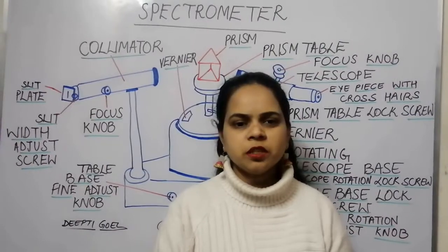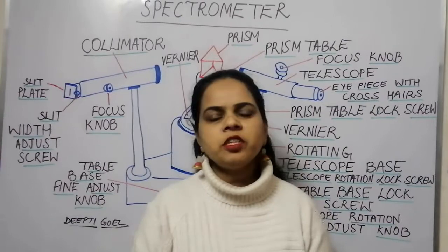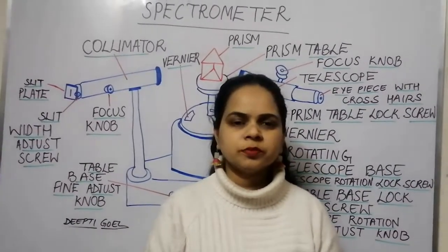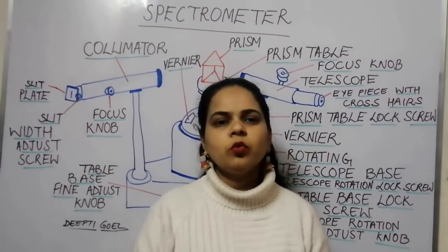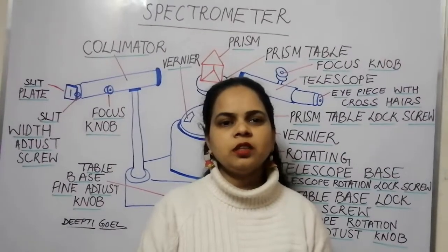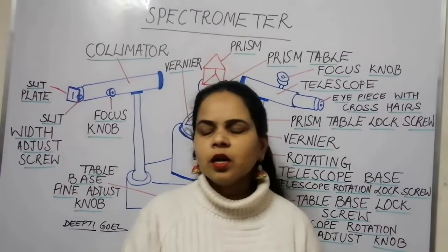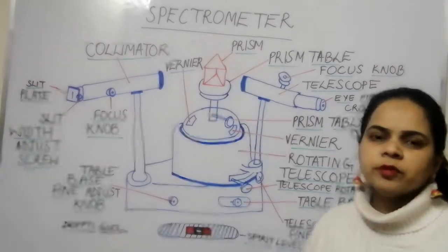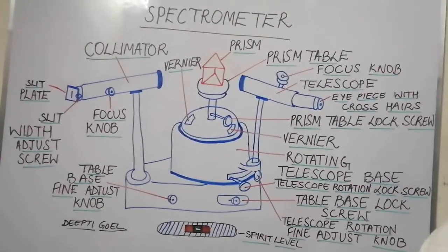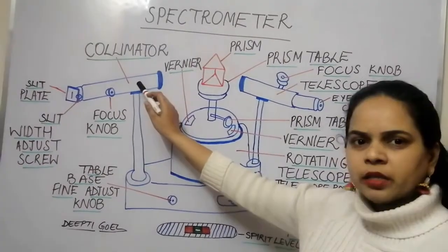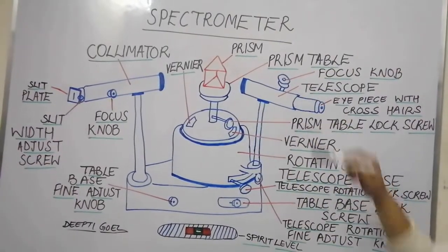Welcome to a new session of the concepts of physics. Today we shall be discussing the spectrometer — what are its various parts? A spectrometer is a device used to measure readings corresponding to optical experiments. It consists of three basic parts: the collimator, the prism table, and the telescope.